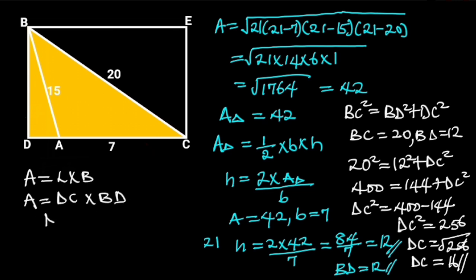DC is equal to 16 and BD is 12. It follows that the area of the rectangle is equal to 16 times 12, which is equal to 192 square units.